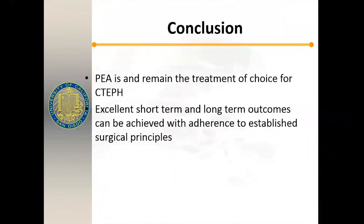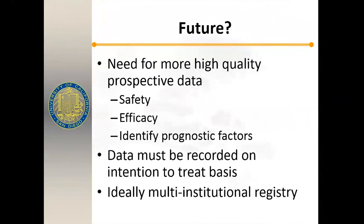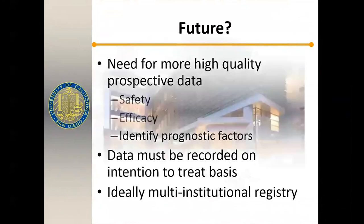In conclusion, pulmonary endarterectomy remains the treatment of choice for chronic thromboembolic pulmonary hypertension. Short- and long-term outcomes can be achieved as long as we adhere to the surgical principles. In the future, we need more high-quality prospective data to prove safety, efficacy, and identify prognostic factors. Despite almost 30 years of experience at UCSD, this is not widely disseminated throughout the country. We need to work toward a multi-institutional registry, which now does exist, and hopefully we'll get more data soon.